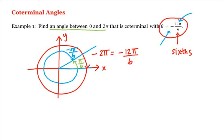Another way to think about it is if we add or subtract 2π radians from θ, then we're going to land on an angle that has the same terminal side, and hence will be coterminal with θ. Specifically, π divided by 6, which is our answer, is equal to θ, or negative 11π over 6, plus 2π.